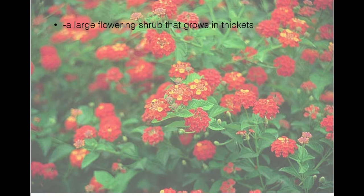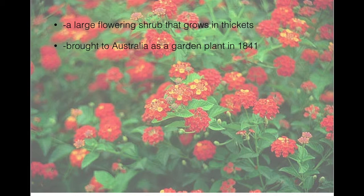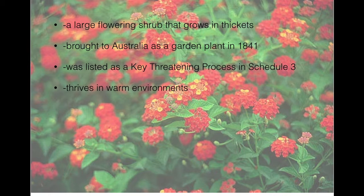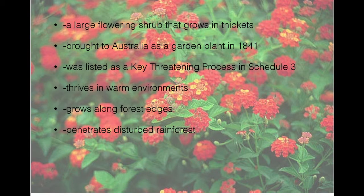Lantana is a large flowering shrub that grows in thickets. It was brought to Australia as a garden plant in 1841 and was listed as a key threatening process in Schedule 3. Thriving in warm environments, it grows along forest edges, penetrates disturbed rainforests, invades open eucalypt woodland pastures, and has invaded at least 4 million hectares.